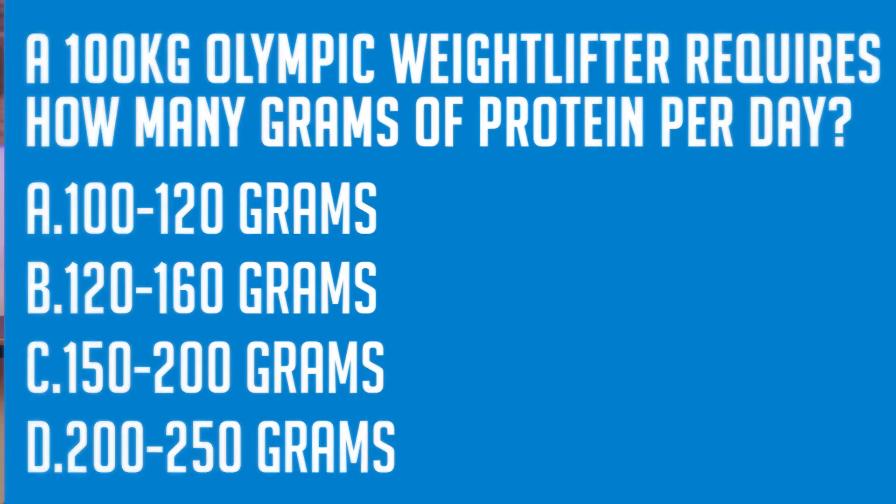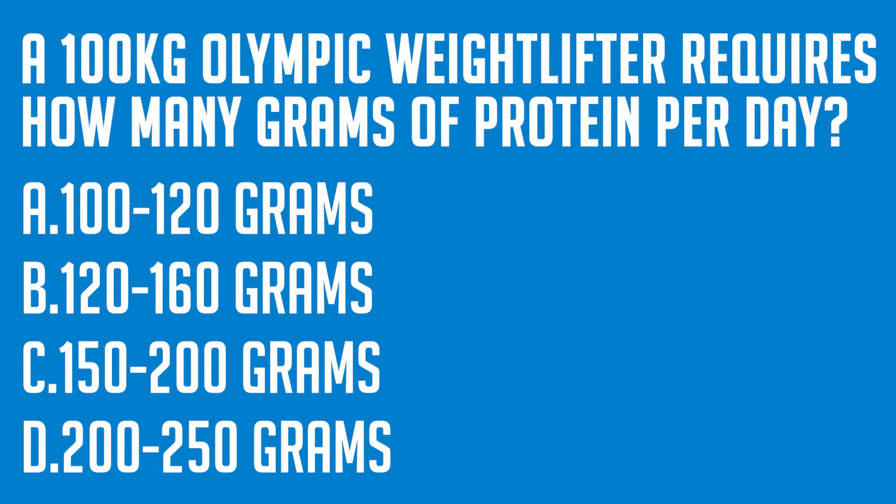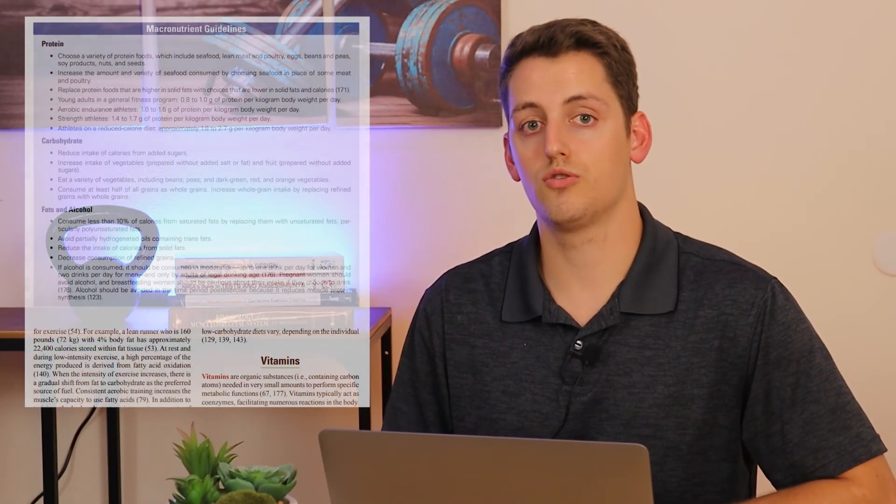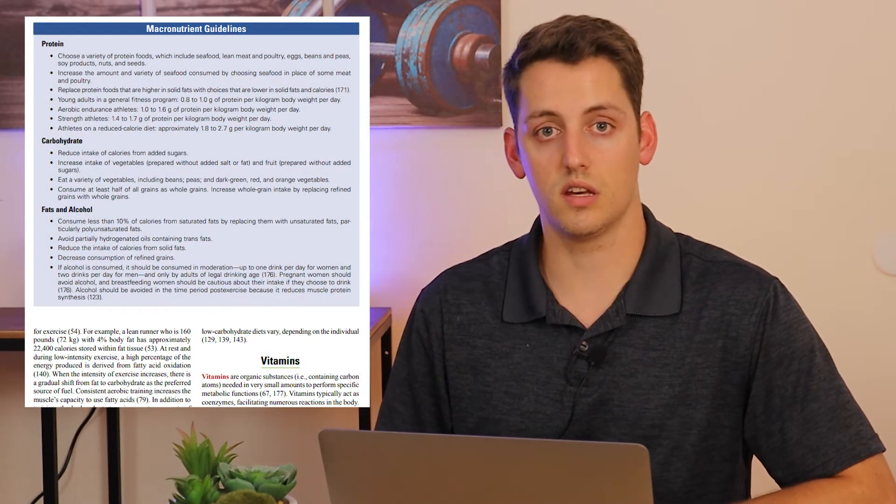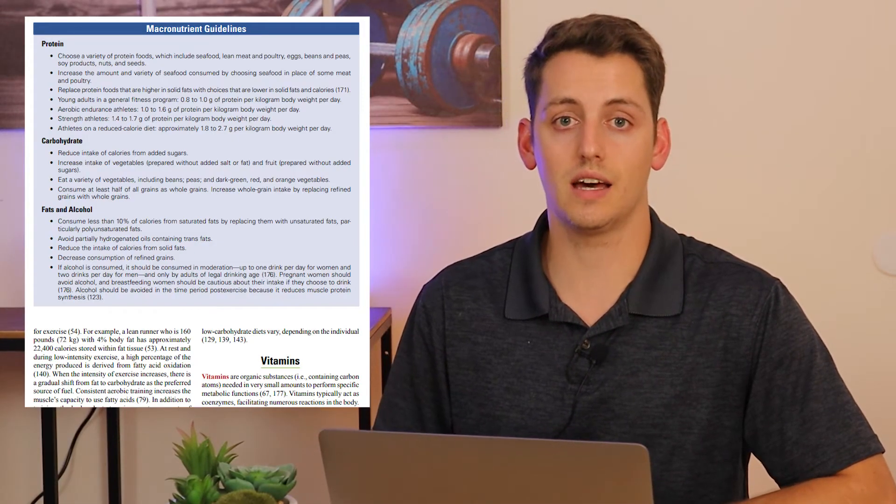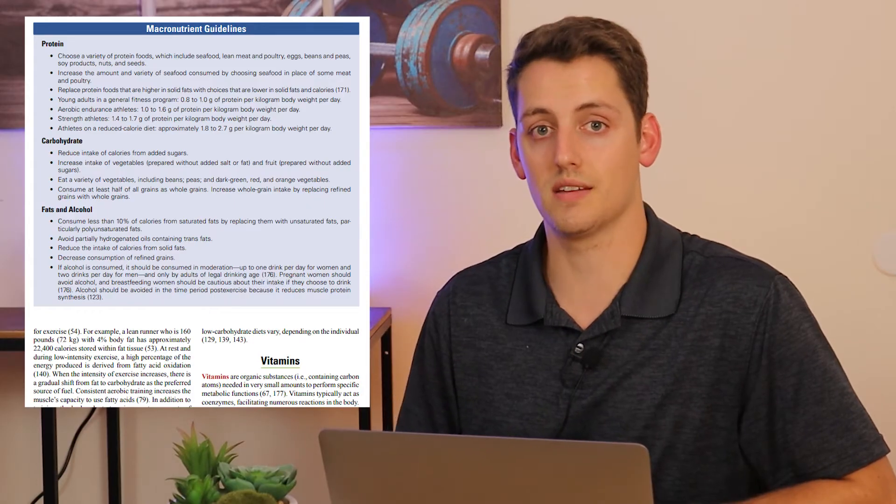In this example, you must know that Olympic weightlifters require 1.5 to 2.0 grams of protein per kilogram of body weight per day, which means that this athlete requires 150 to 200 grams of protein per day or option C. You could be asked about any macronutrient need or any sport listed in the CSCS curriculum, so make sure that you study up on the macronutrient guidelines as well as the various sport demands.